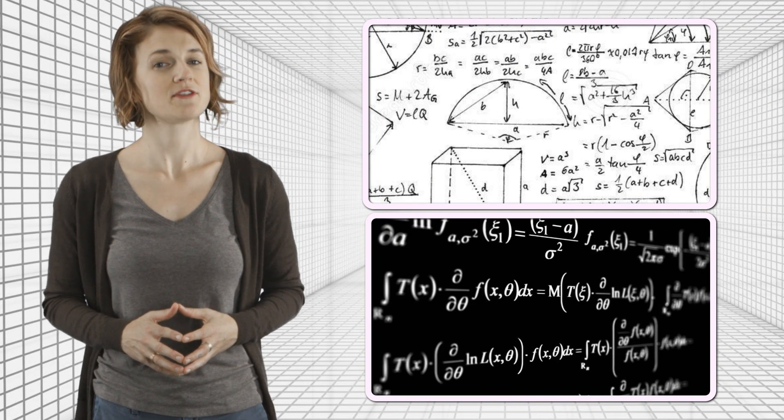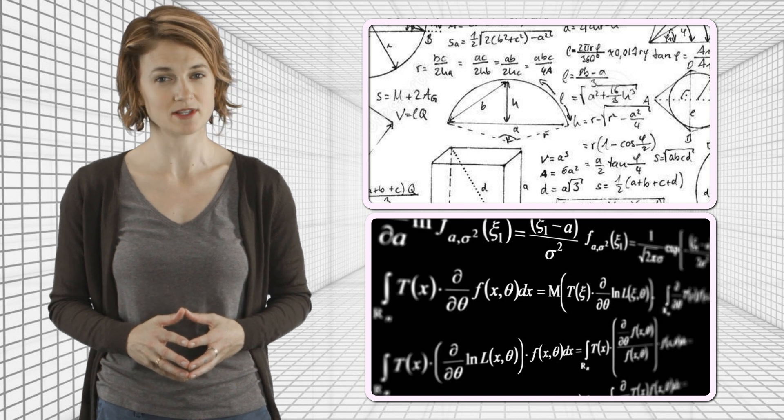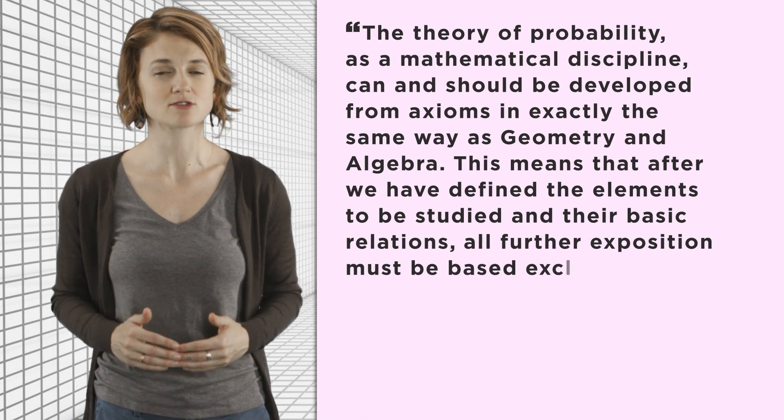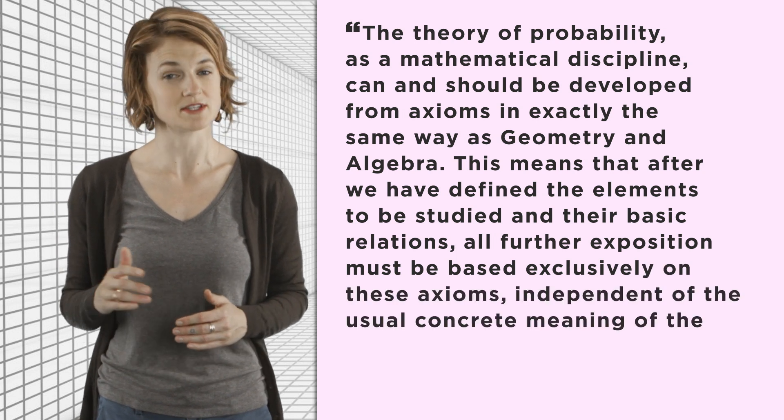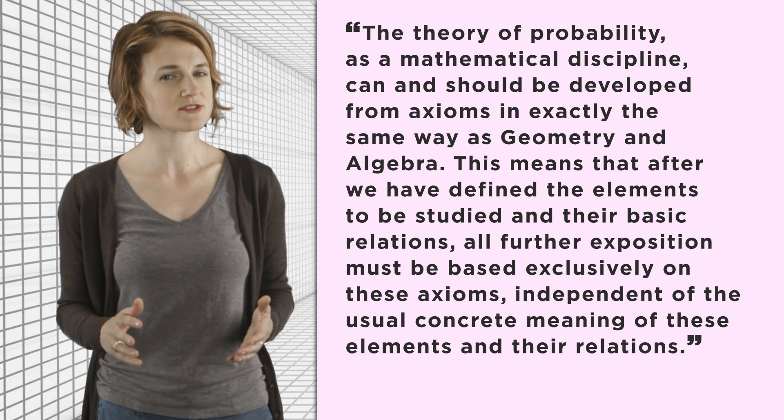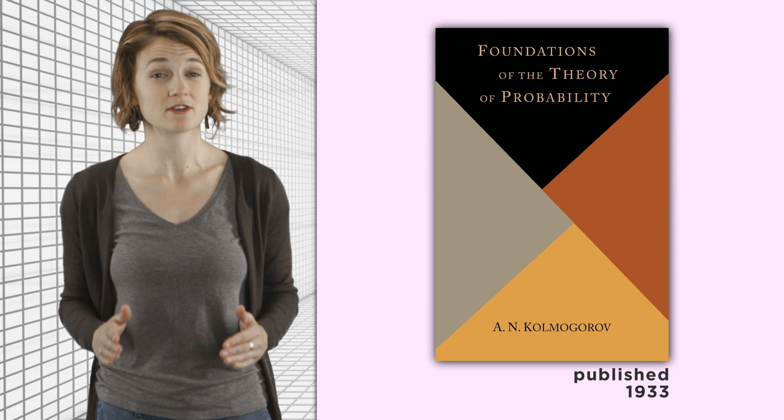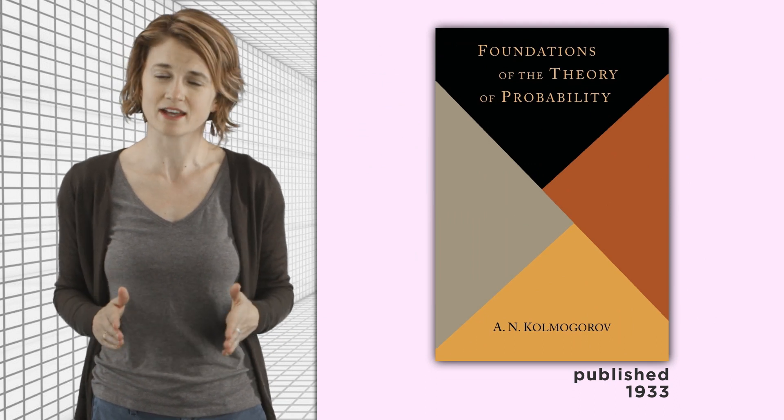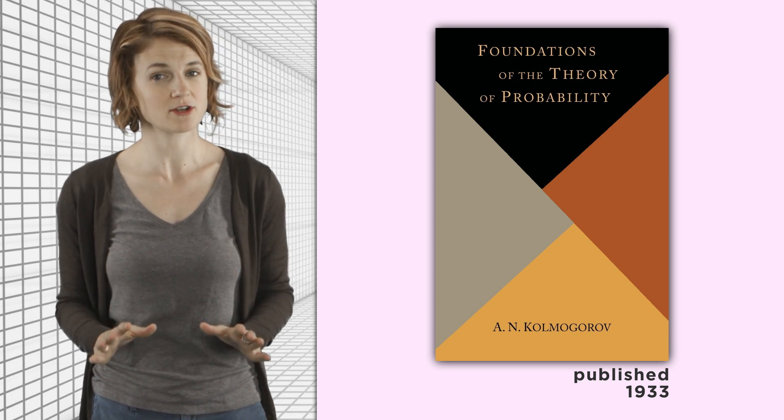The theory of probability as a mathematical discipline can and should be developed from axioms in exactly the same way as geometry and algebra. This means that after we have defined the elements to be studied and their basic relations, all further exposition must be based exclusively on these axioms, independent of the usual concrete meaning of these elements and their relations. That quote is from Andrei Kolmogorov's 1933 textbook, Foundations of the Theory of Probability, which essentially achieved exactly what he's asking for, a rigorous axiomatic basis for mathematical probability.